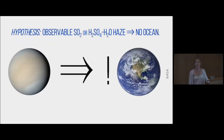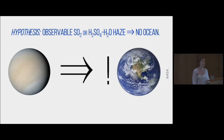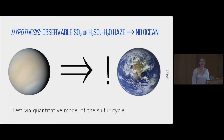So now we want to put forward the hypothesis: if we can observe SO2 or sulfate haze, we don't have an ocean or a large significant quantity of surface liquid water present on that planet. Anecdotally in the solar system, we know this is true with Venus. But one example does not a very convincing theory make. So we test this via a quantitative model of the sulfur cycle.